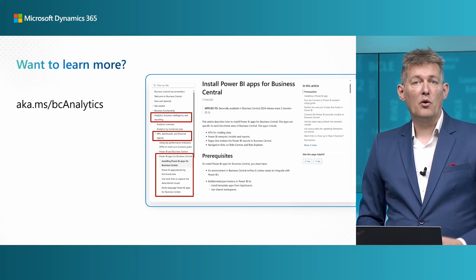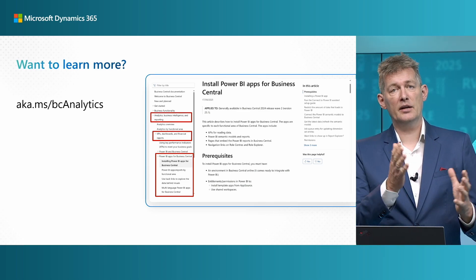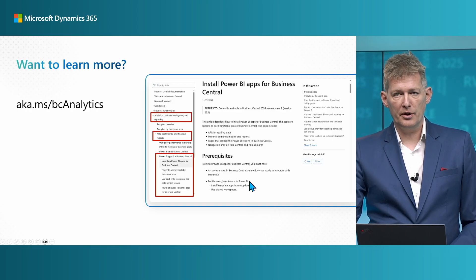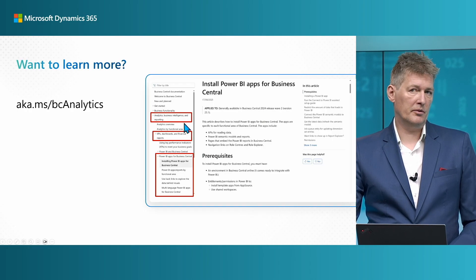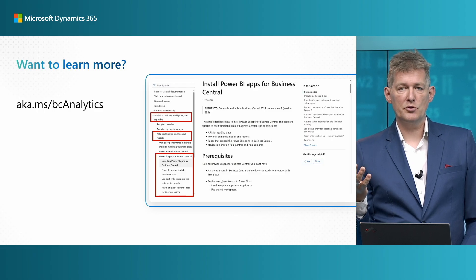If you want to learn more about the Power BI apps for Business Central, there's a landing page at aka.ms/bc-analytics. That takes you to the overall landing page for everything. You then need to navigate two levels down — one is KPIs and then there's a section for Power BI apps. The Power BI apps have a lot of different articles covering how to install them, how to configure them, FAQ, a troubleshooting guide, and others.